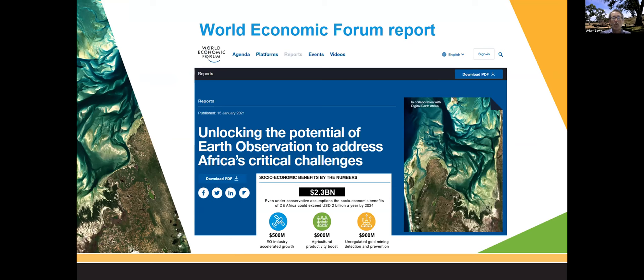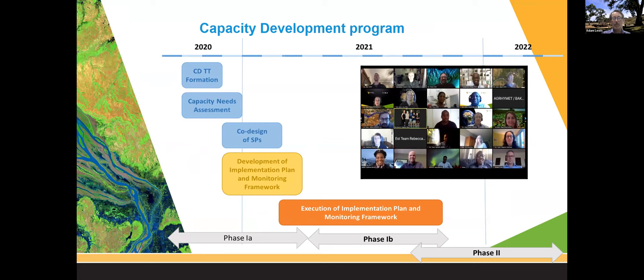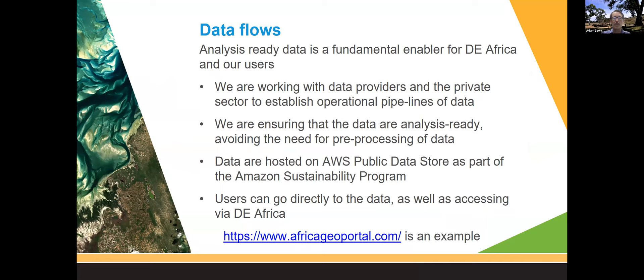We've also made good progress in our capacity development program. All the training material I spoke of earlier went in advance of our formalizing the capacity development program, but will now become part of it. This year, work led by ITC and the University of Twente in the Netherlands will really take shape. We'll be training our implementing partners and training them to be trainers of third parties.